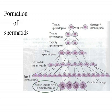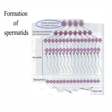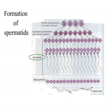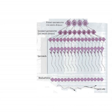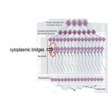Primary spermatocytes form haploid secondary spermatocytes as a result of meiosis I, while spermatids are formed as a result of meiosis II, which is equivalent to mitosis. Though spermatids are haploid, they are functionally diploid due to their association with each other via cytoplasmic bridges.